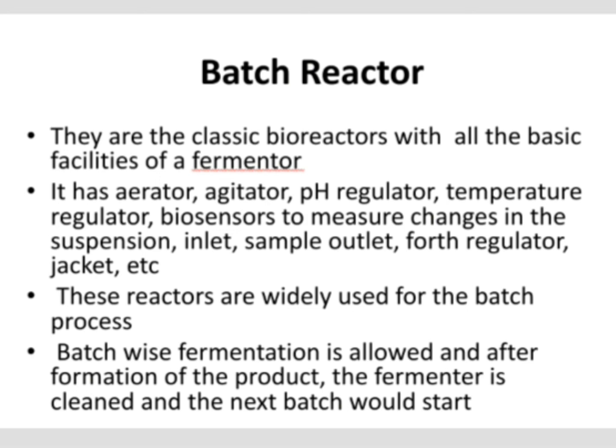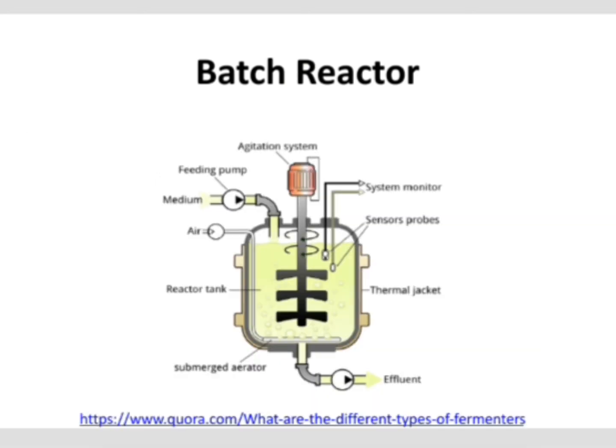The batch reactor is the classic or conventional type of fermenter in which most industrial or commercial products are produced. It has all the basic features of a common fermenter — units for controlling pH, temperature, pressure, and all inlet and outlet provisions. It is called a batch fermenter because batch-wise fermentation takes place. After a complete batch is operated and the product is extracted, the fermenter is cleaned, fresh sample and fresh inoculum are introduced, and the process is repeated.